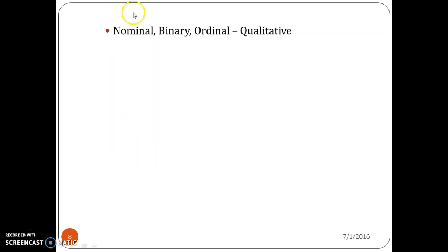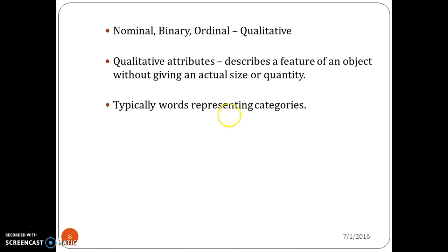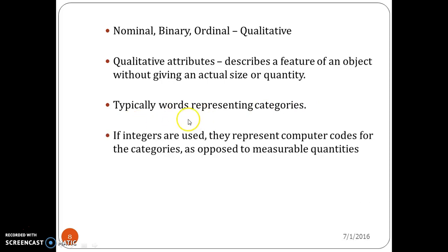Nominal, binary, and ordinal attributes are called qualitative attributes. We call them qualitative because they describe a feature of an object without giving an actual size or quantity — they typically use words representing categories. You cannot mention the actual size or quantity; hence, these are qualitative attributes.